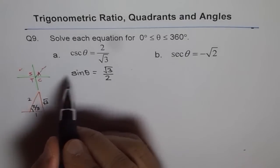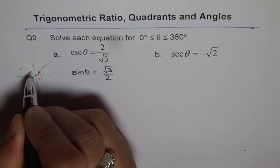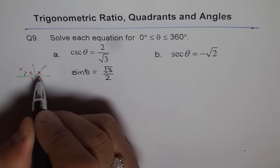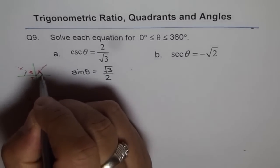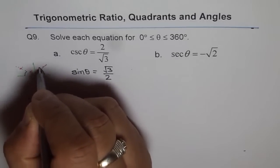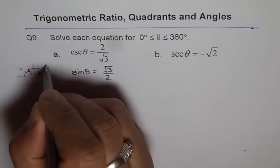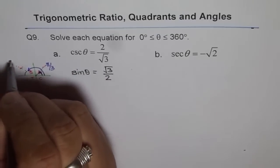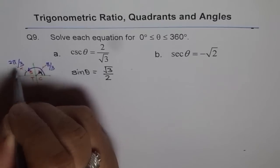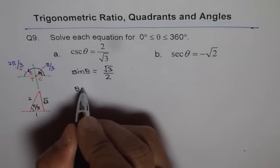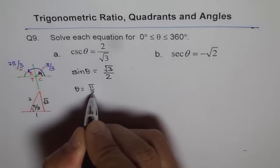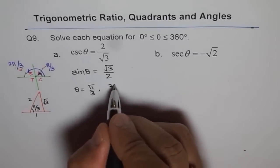Now, since sine is also positive in quadrant 2, we also have this solution. These are the two solutions and we should write all our solutions as principal angles. This is one angle pi by 3 and the other one is 2 pi by 3. And therefore, we can write that theta equals pi by 3 and 2 pi by 3.